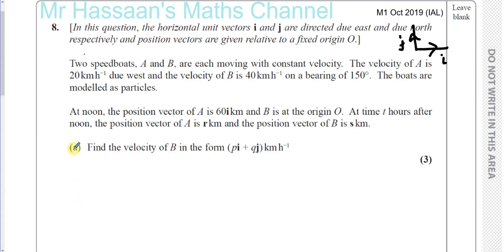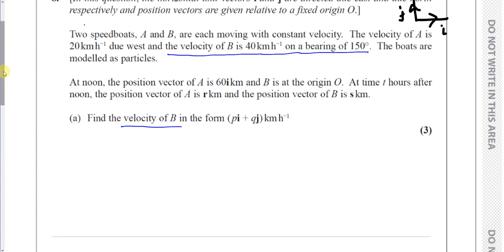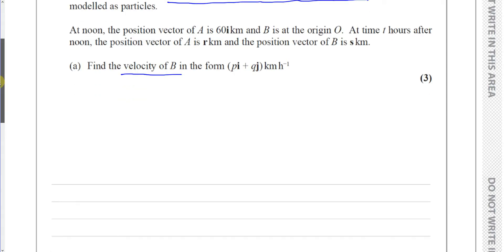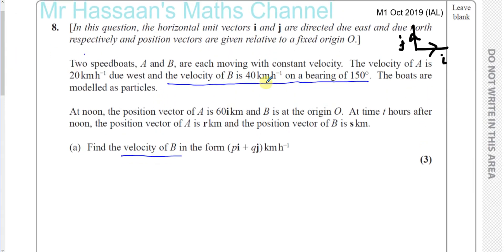Part A: find the velocity of B in the form pi + qj kilometers per hour. We're told that the velocity of B is 40 kilometers per hour on a bearing of 150 degrees. So 40 km/h is the magnitude of the velocity and 150 degrees is its direction — that's one way of giving a vector quantity using a bearing. We need to express this as a vector in the form pi + qj, i.e., horizontal and vertical components.